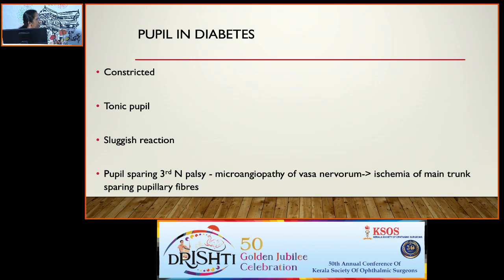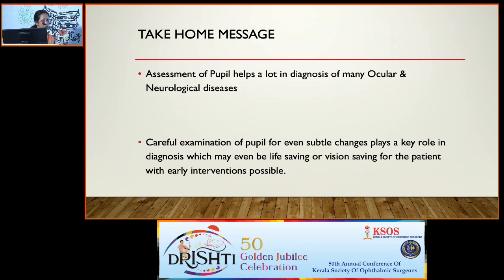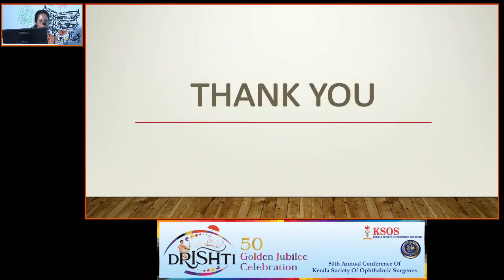Hutchinson's pupil is important for assessing head injury. In stage one, the ipsilateral pupil constricts due to irritation while the contralateral is normal. As intracranial tension rises, the ipsilateral pupil dilates due to parasympathetic paralysis and the contralateral starts constricting. In stage three, both pupils dilate. Always avoid mydriatics in head injury as the pupil requires repeated assessment. In diabetes, pupil changes vary — it can be constricted, tonic, or sluggishly reactive; third nerve palsy is usually pupil-sparing due to ischemia sparing the pupillary fibers. Careful pupil examination plays a key role — it may even be life-saving.